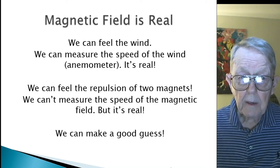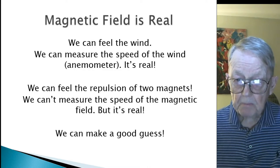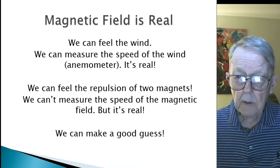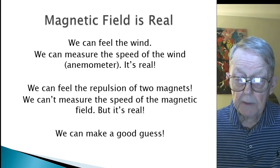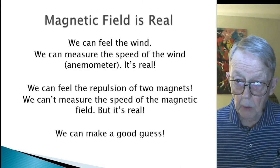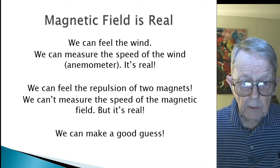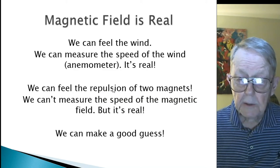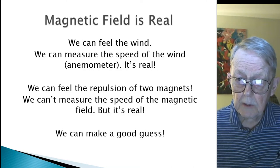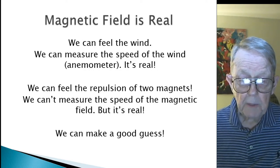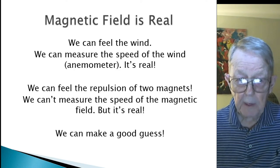We can feel wind. We can measure the speed of the wind with an anemometer. We know it's real because it's the atmosphere moving, putting pressure on the surface of your boat, your sail of your boat. We can also feel the repulsion of two magnets. You need to put north and north, or south and south of a magnet, and you try to push them together. You know there's something there. You can feel it. It's real. It's made of something.